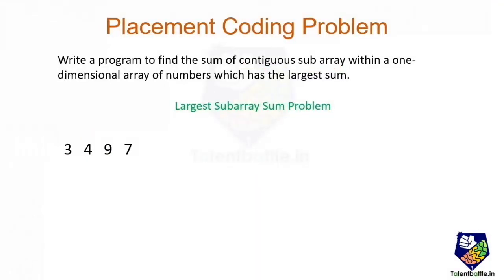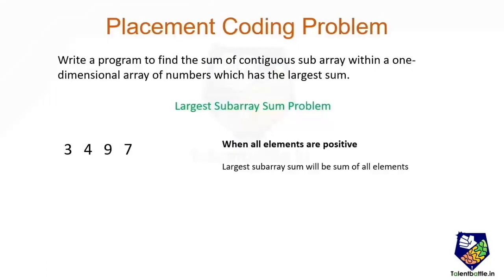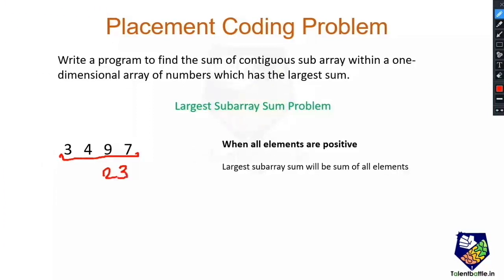Now we will turn our focus to the solution of the problem. If all the elements of the array are positive, like in the case of [3, 4, 9, 7], the solution is pretty obvious: the largest subarray sum will be the sum of all elements. So in this case the largest subarray sum will be 3 + 4 + 9 + 7, that is 23. This was pretty straightforward.